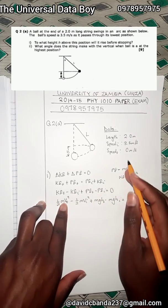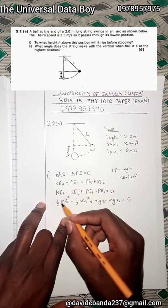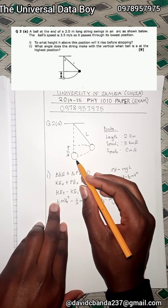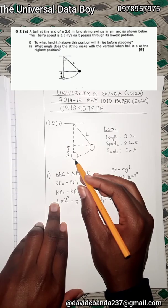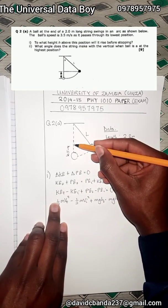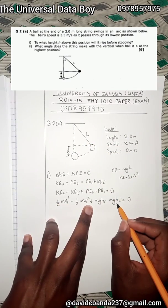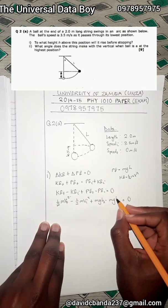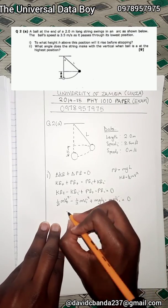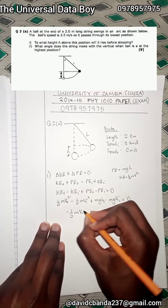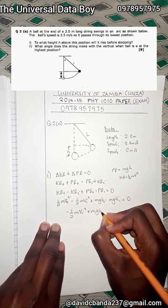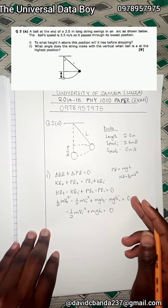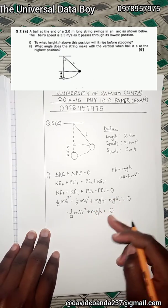The final speed is zero because the ball comes to rest, so that term cancels out. We also assume the lowest position is our reference, so h_initial equals zero, which cancels that term too. We're left with: negative ½mv_i² plus mgh equals zero.